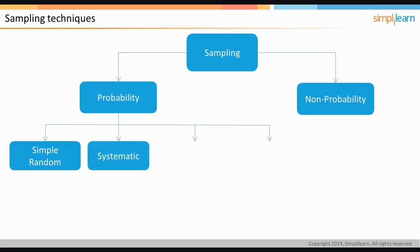Next is systematic sampling, and it involves the selection of elements from an ordered sampling frame.